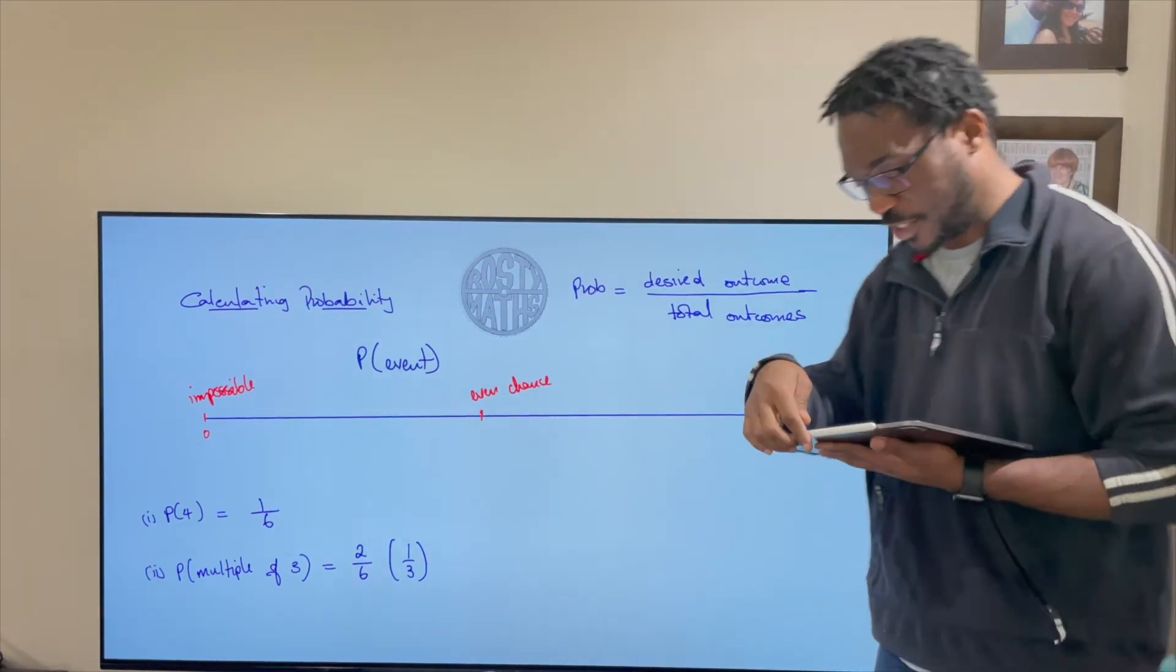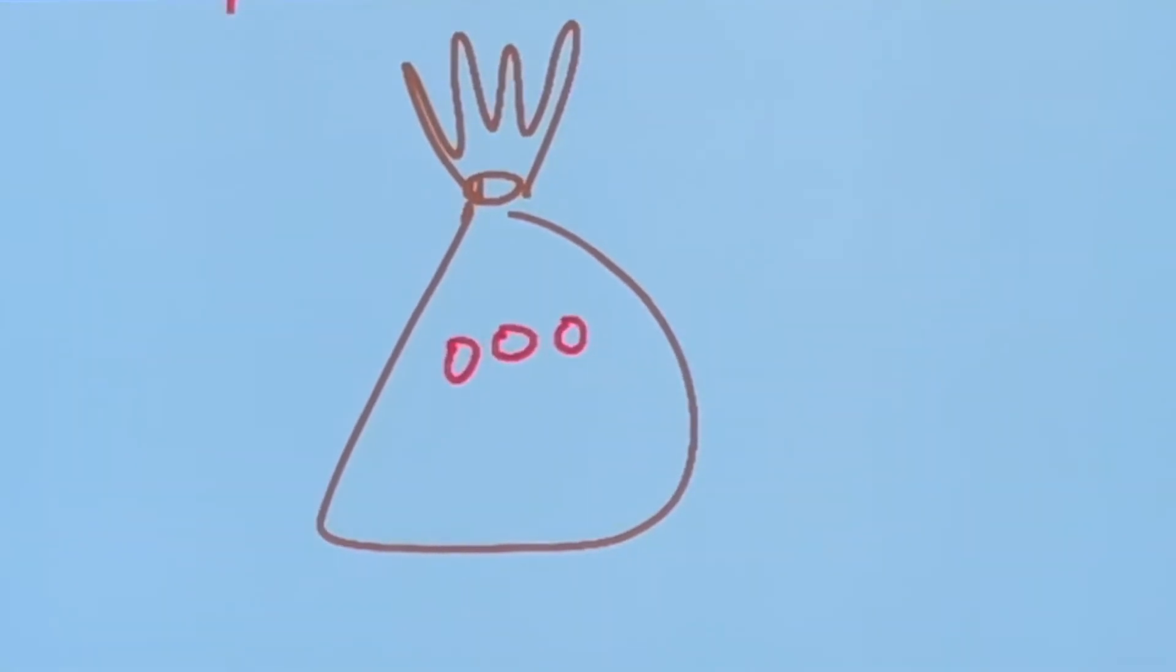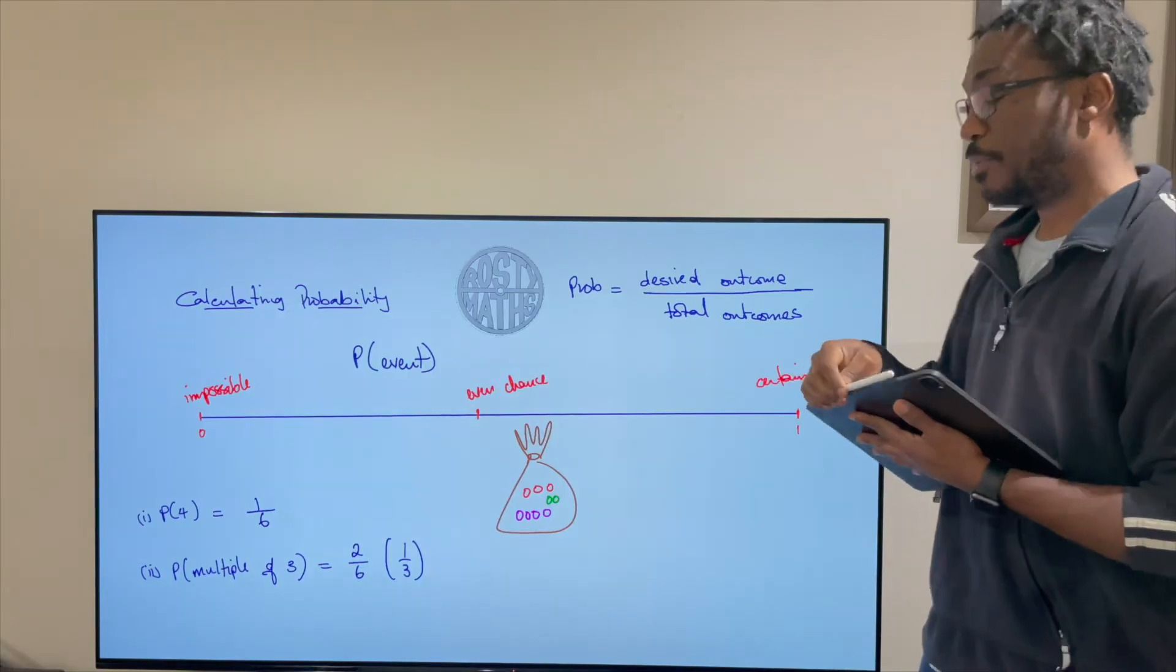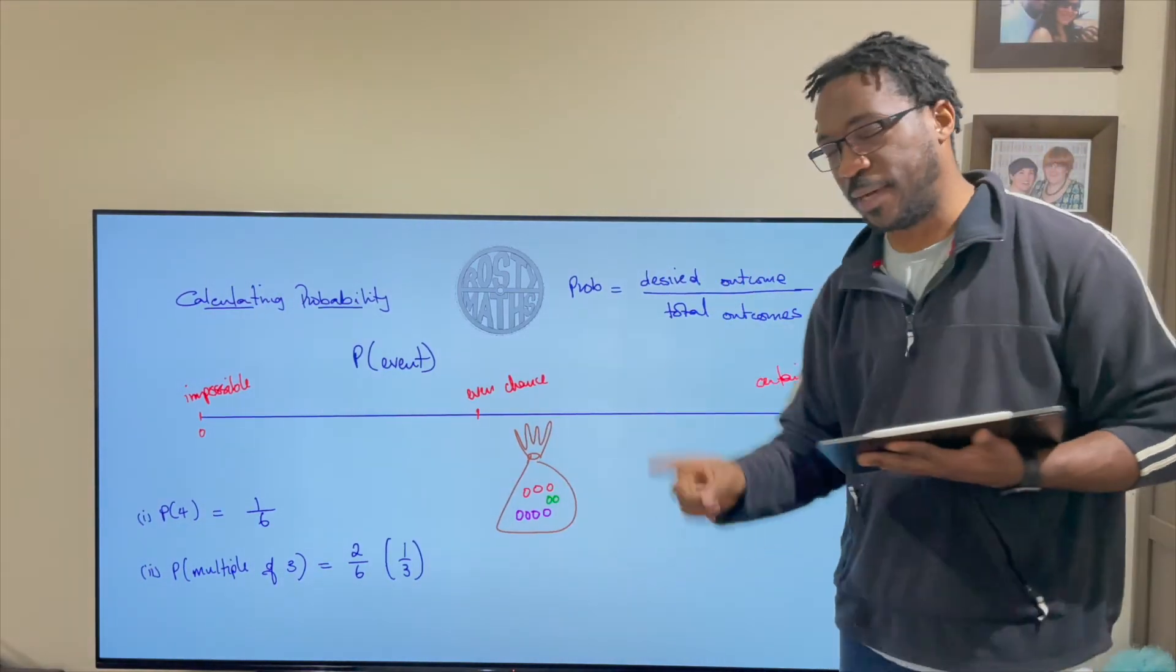Anyway one last question to sneak in before we finish this one. And so for this one I am going to have a bag and in that bag I am going to have three red counters and I'm going to have one two three four purple counters and I'm going to finish off with two green counters and I'm going to say we're going to pull a counter from that bag, one counter.